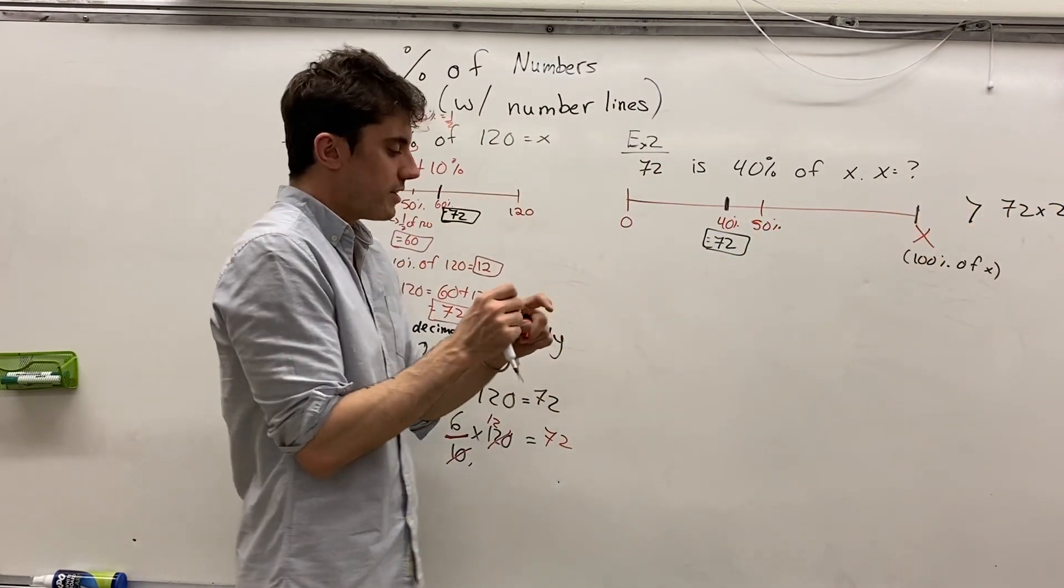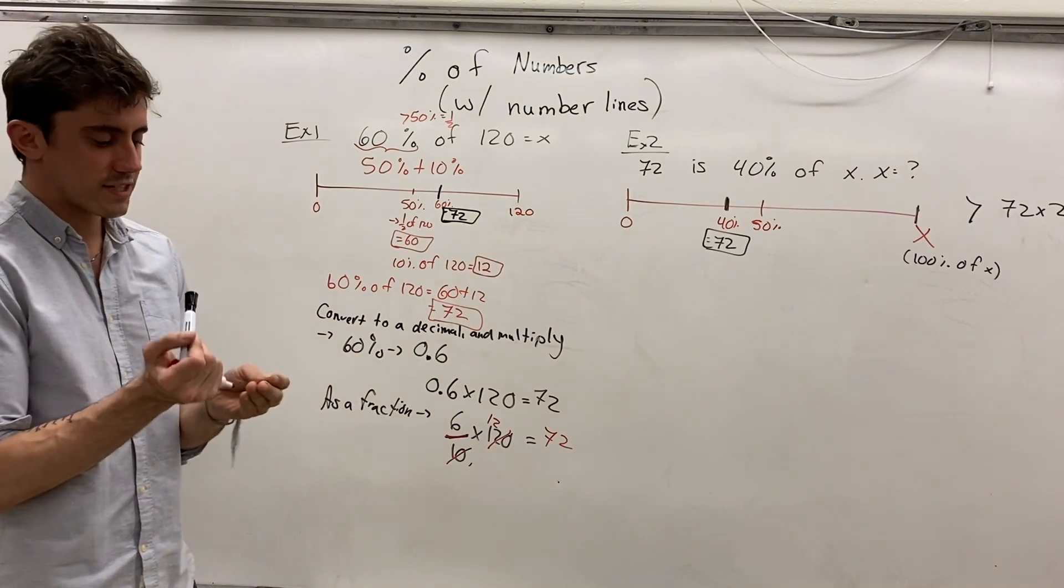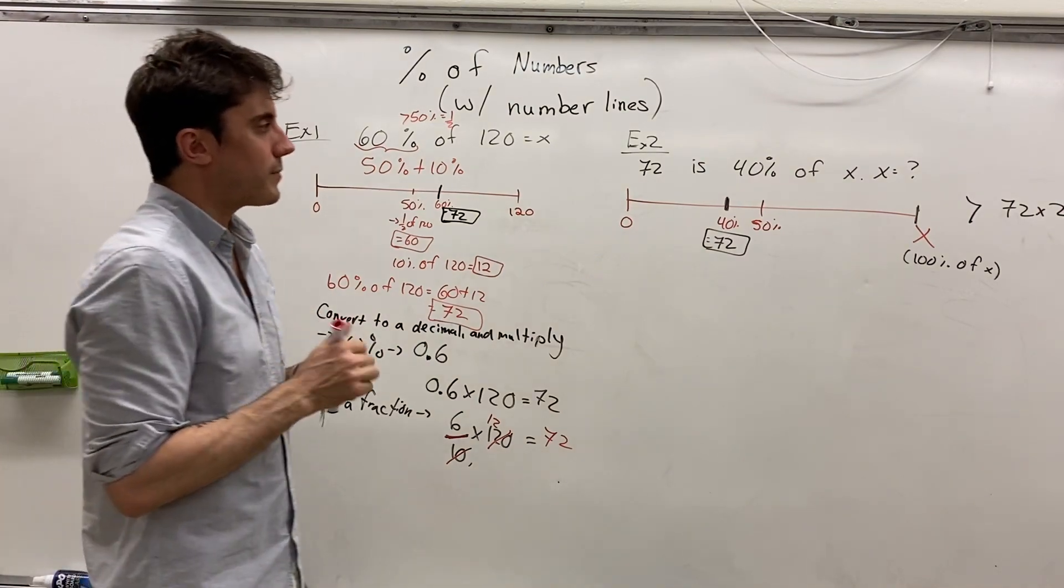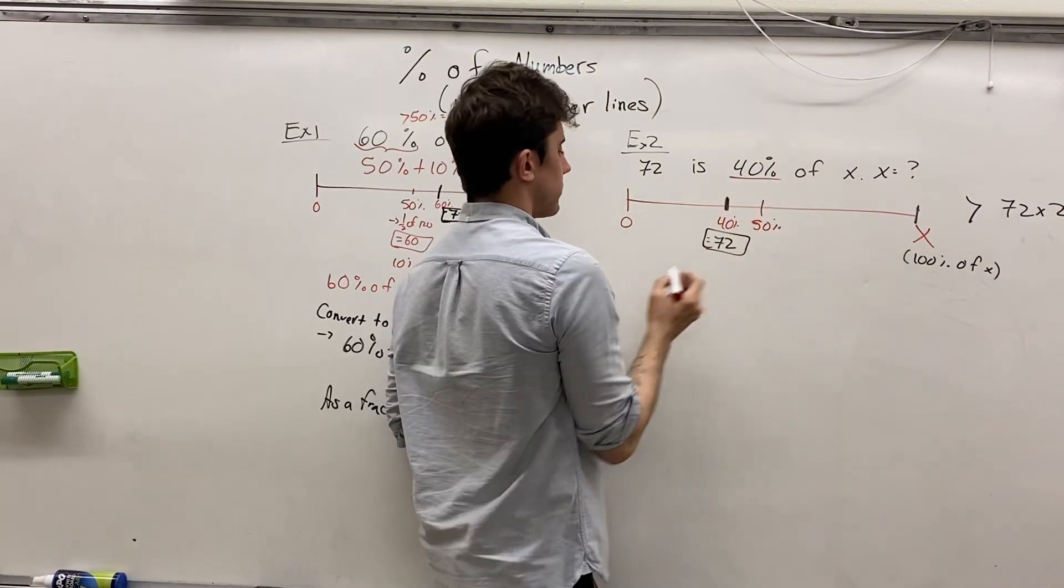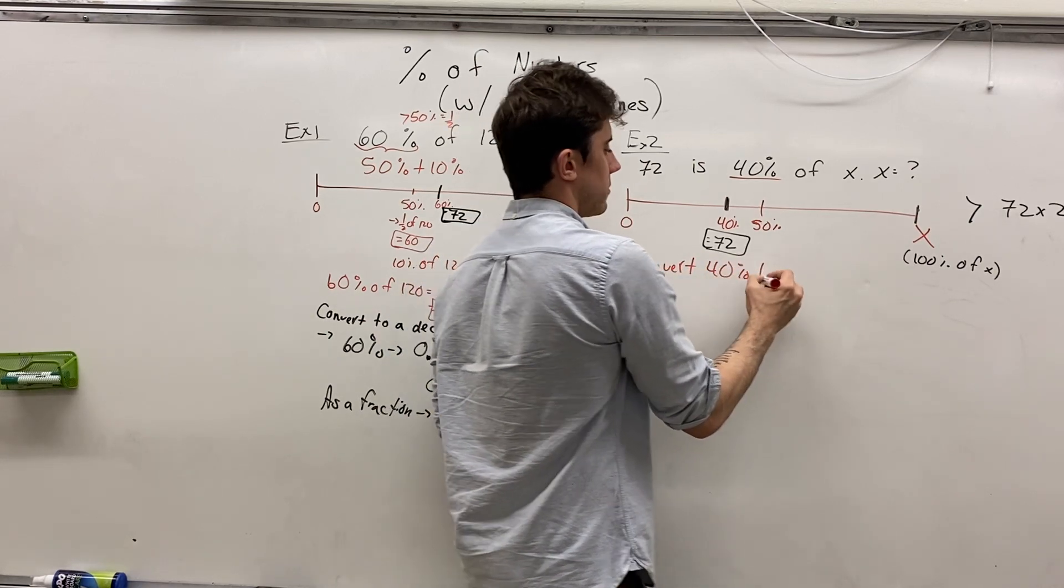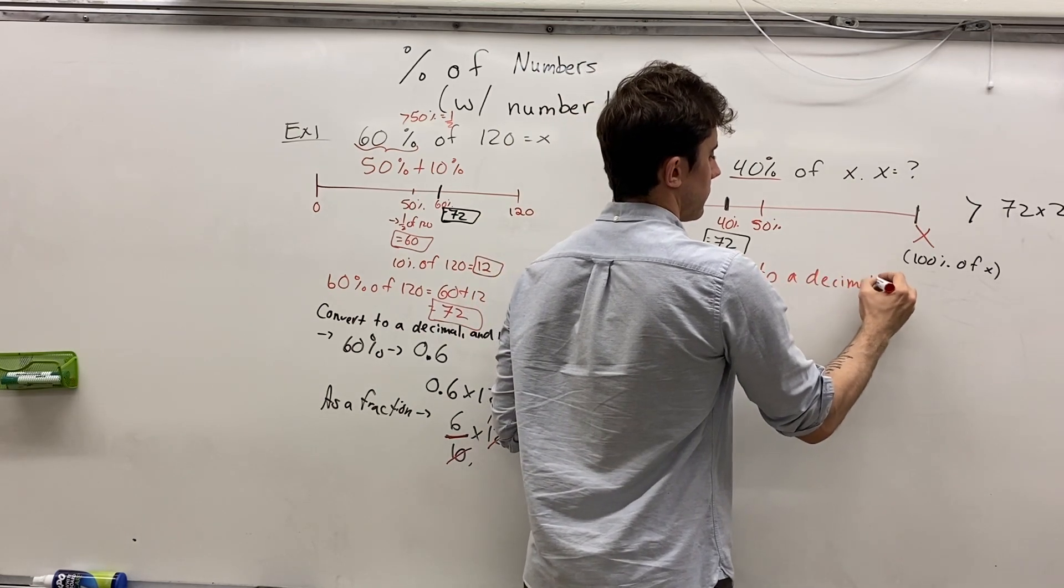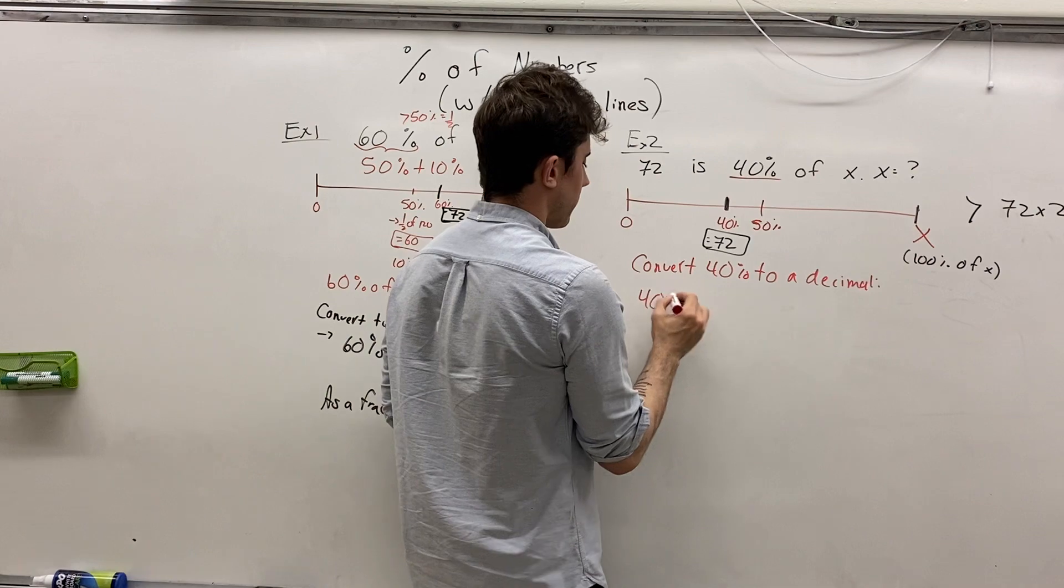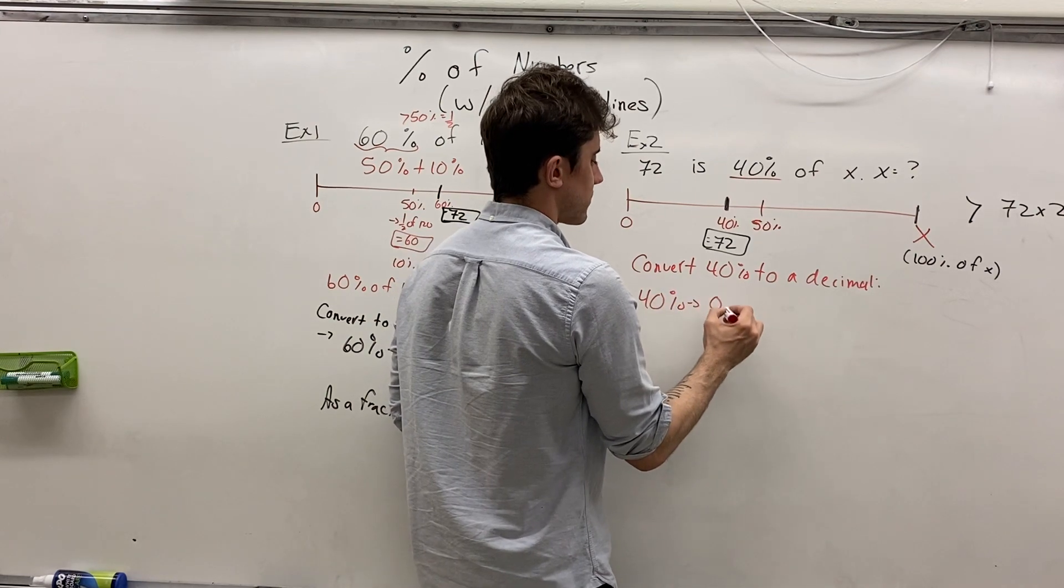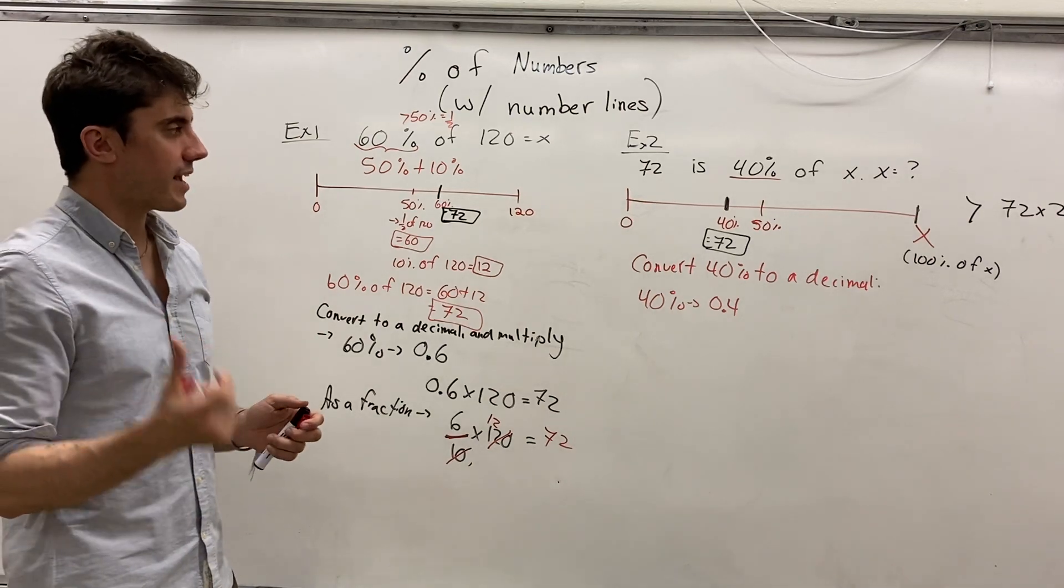And so now we can use a very similar strategy. I'm going to convert to a decimal. I think that's the best way to go about this one. I'm going to convert 40% to a decimal. And so we know that 40% as a decimal is 0.4.